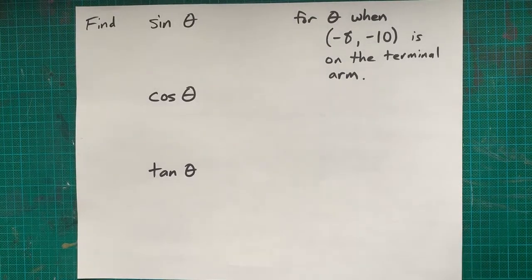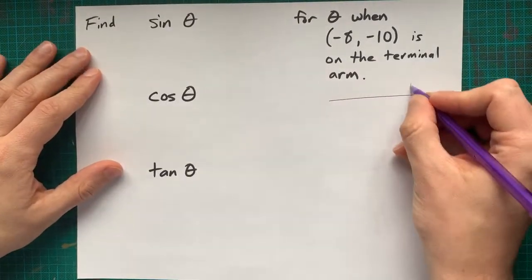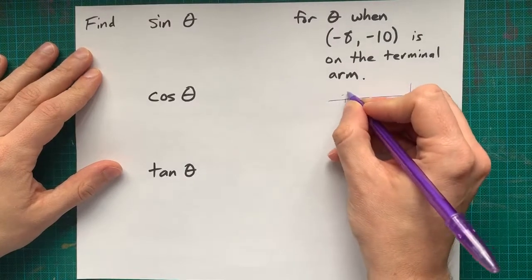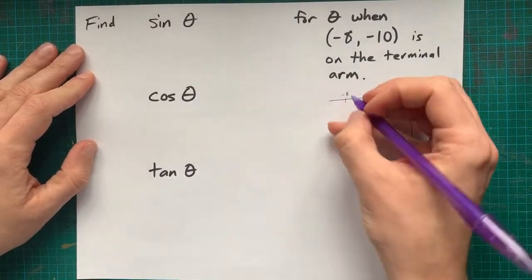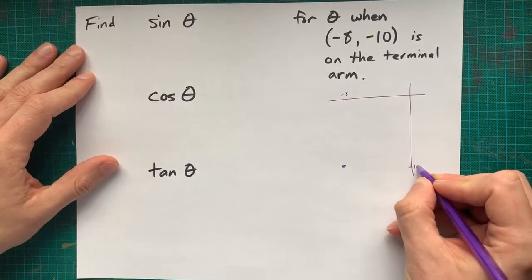Here we're being given the point negative 8, negative 10. Negative 8 is over here to the left of the y-axis, and then you go down 10.